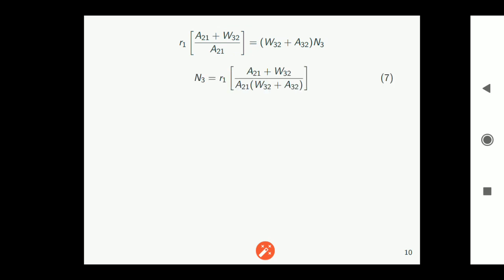Now that can be simplified further to the population of n3. So then you get n3 to be equal to r1*(a21 plus w32) whole divided by a21*(w32 plus a32).